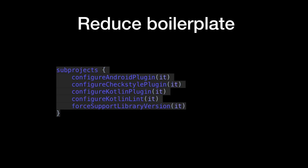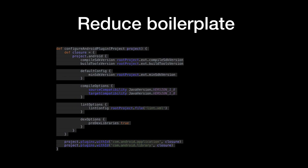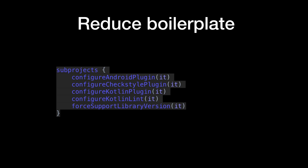There are a couple ways to reduce boilerplate in Gradle itself. Rather than copy-pasting the Android Gradle plugin configuration into every module, I just set it up in the root build.gradle so it sets all the defaults — things like compile SDK version, build tools version, min SDK — for every project, keeping them consistent. That is really helpful when you want to change any one of these things. You can apply the same idea to CheckStyle, Kotlin, or anything else.